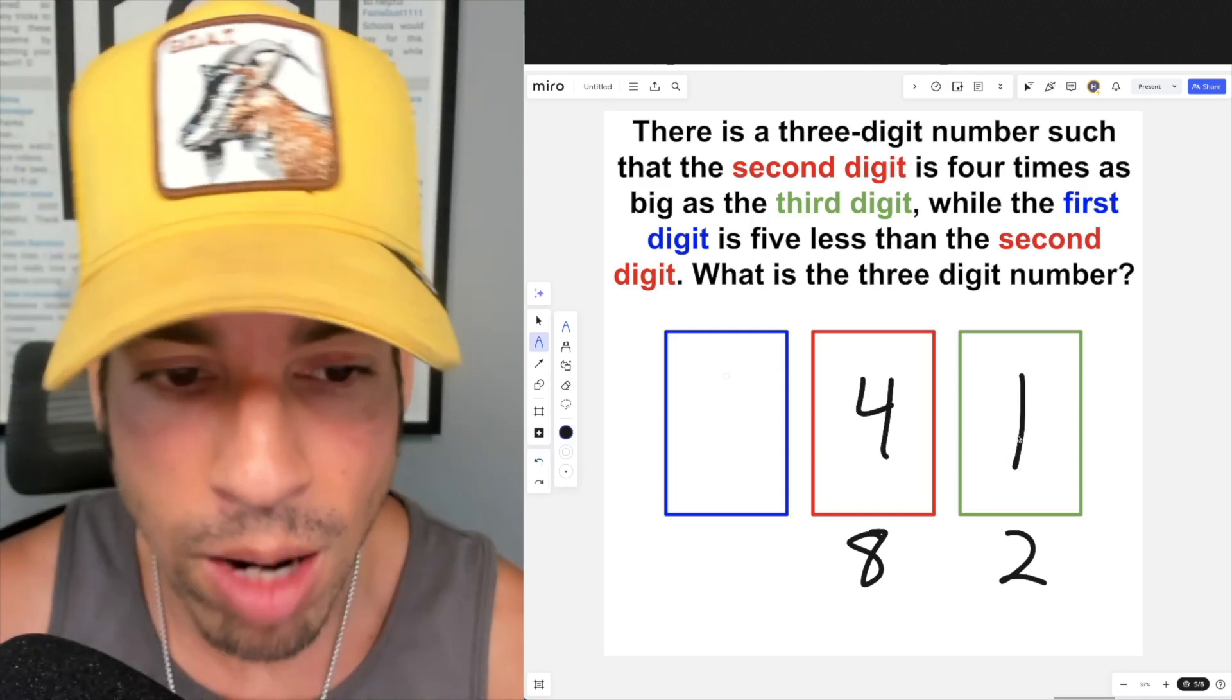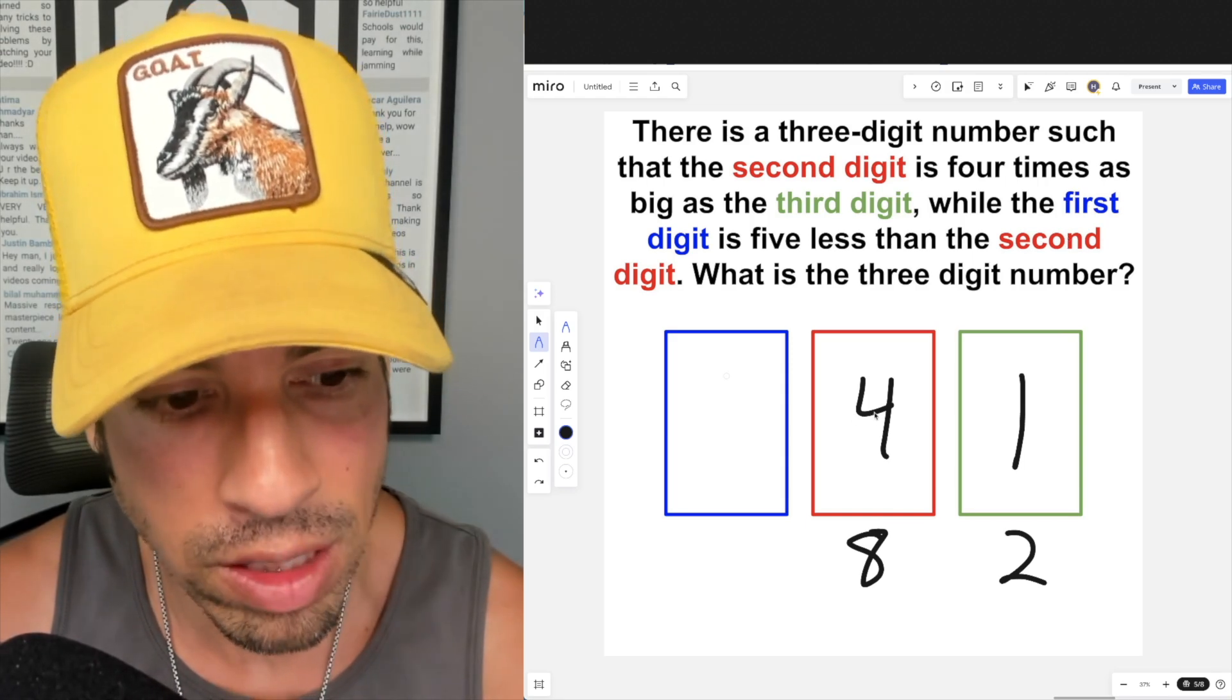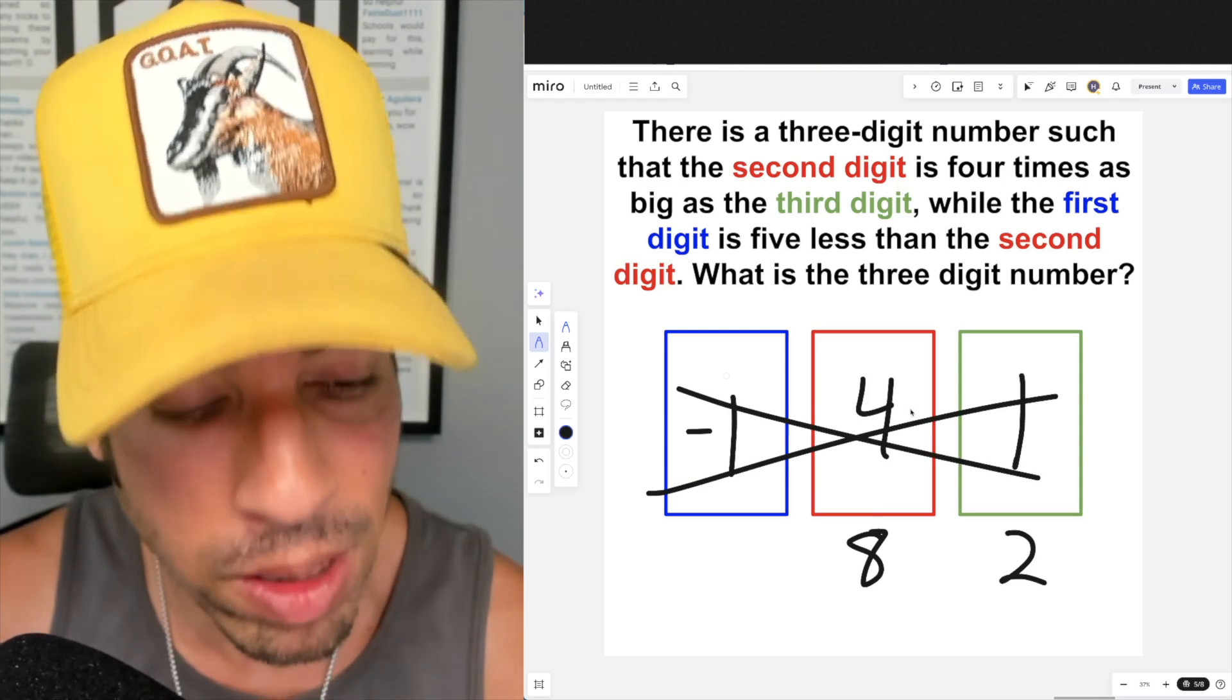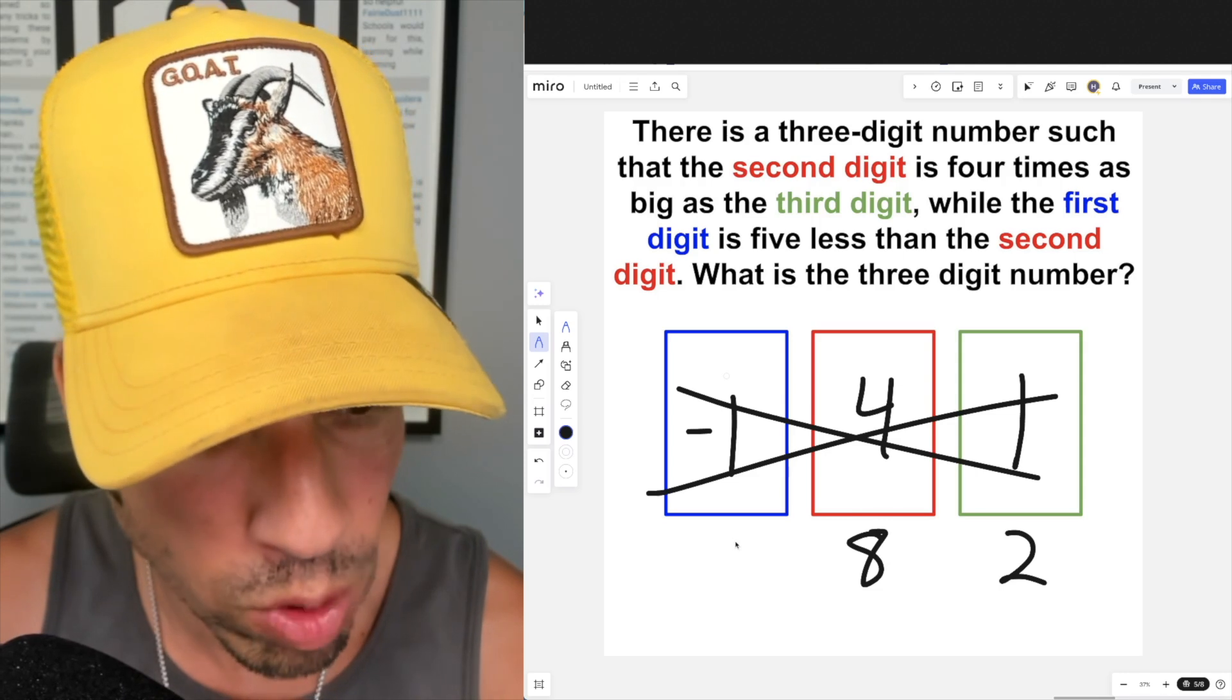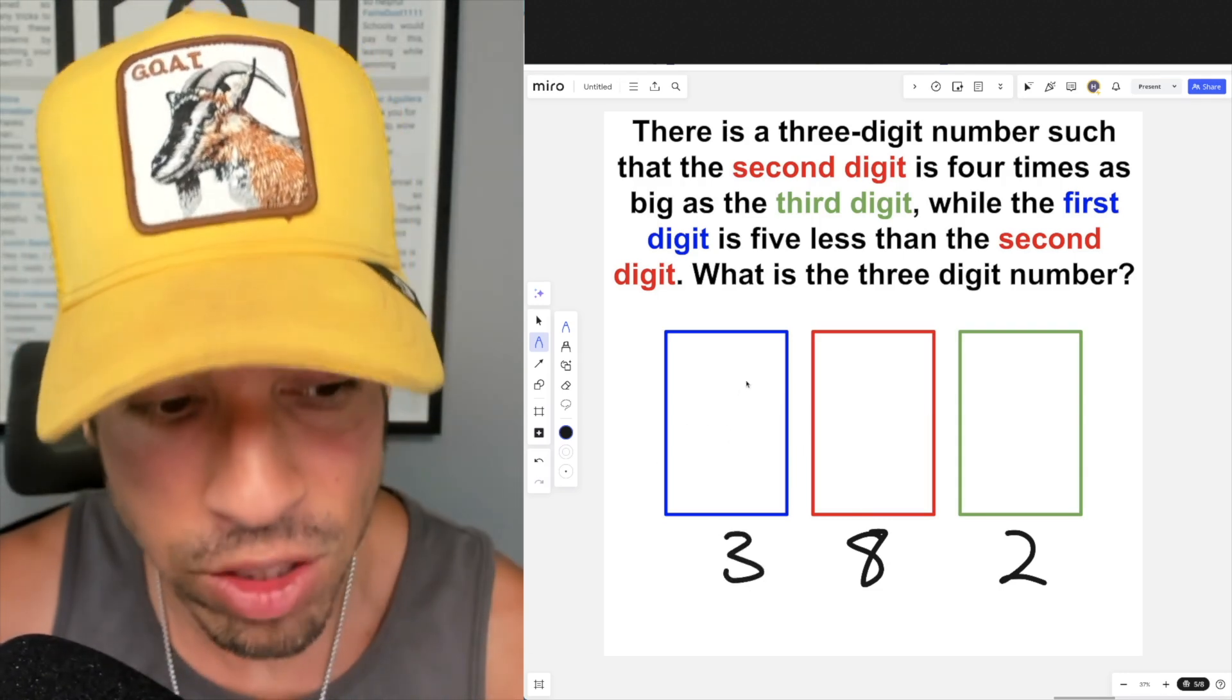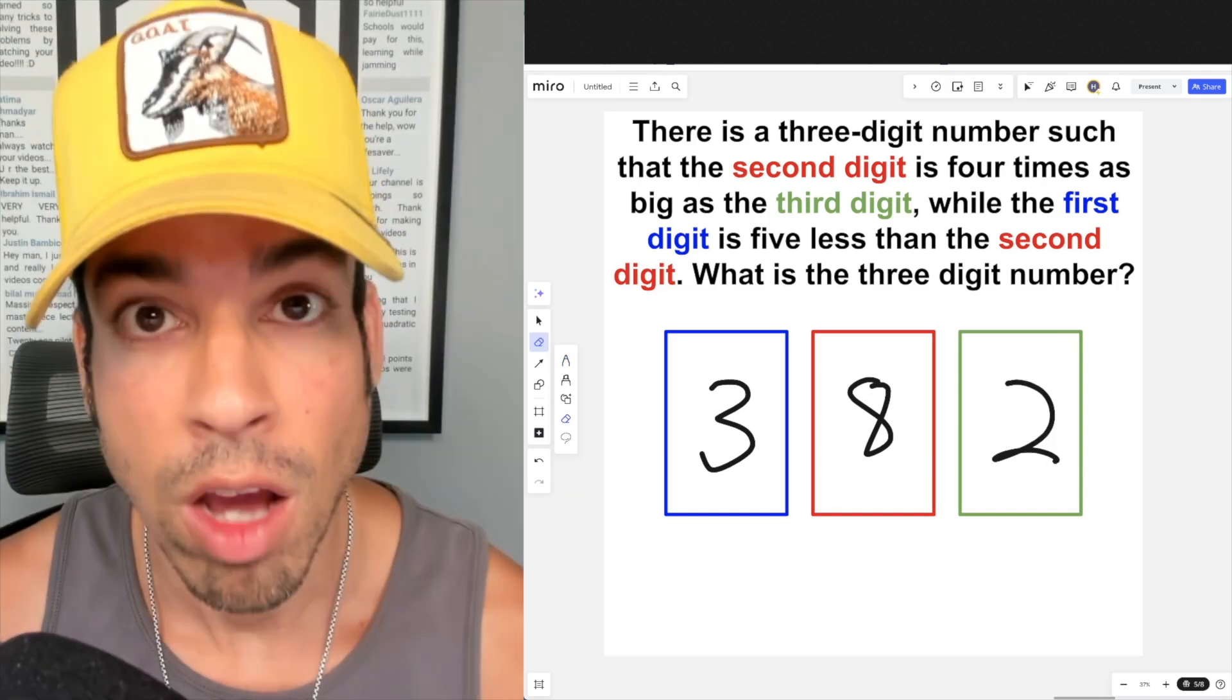Now it says the first digit is five less than the second digit. So in this case, what's five less than four? That would be negative one, which is outside the realm of possibilities for digits. We can't have negative digits. But over here, five less than the second digit would be three, which means our only viable solution and therefore answer is 382. That's how you do it. Done!